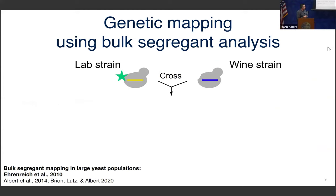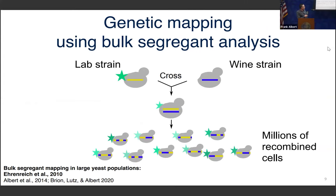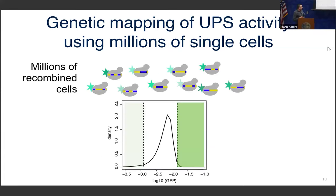For genetic mapping, we take our two strains and cross them, getting a diploid hybrid that we then sporulate. We get populations of meiotic recombinants where every cell carries a random combination of the two parental alleles — they're haploid. Importantly, we're not picking out individuals and putting them in a 96-well plate; we're keeping them as a pool. A single tube will carry millions of these recombinants, each genetically unique. That's where the large statistical power comes from.